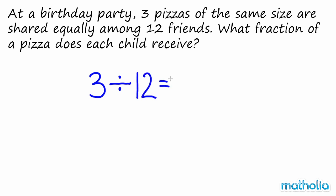Three divided by twelve is equal to three twelfths. We can simplify three twelfths by dividing the numerator and denominator by three to give one quarter. So each child receives one quarter of a pizza.